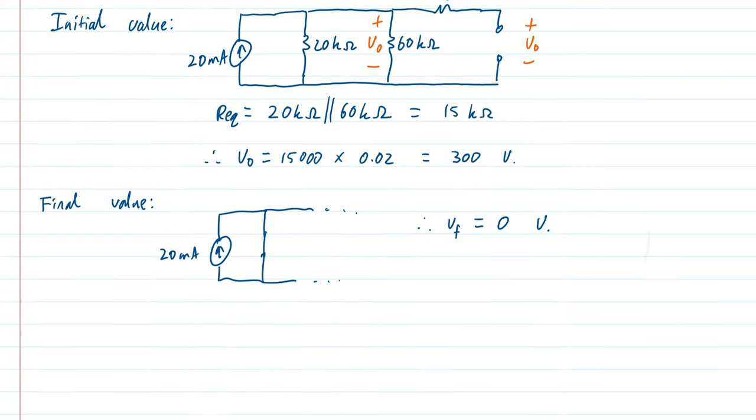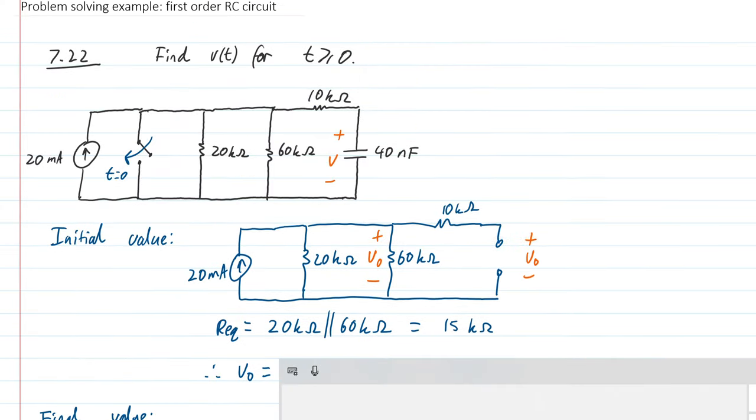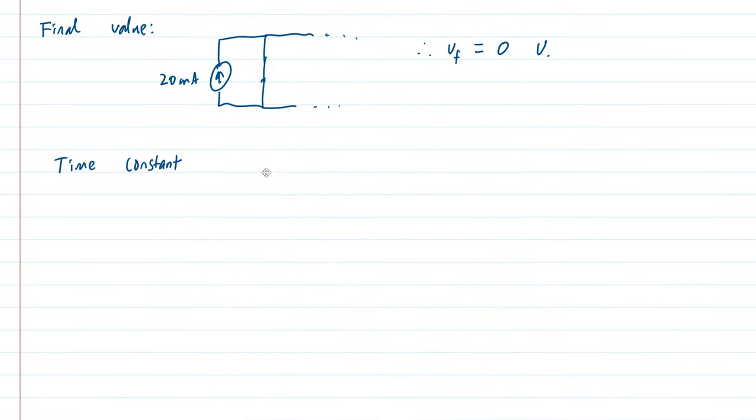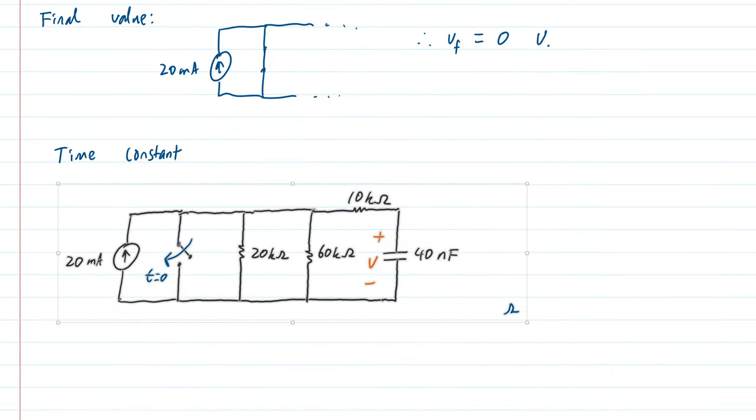We also need to know the time constant. In order to get the time constant, we need to know what is the Thevenin resistance that the capacitor sees. If I redraw my circuit and do a few things, we'll be able to calculate that.